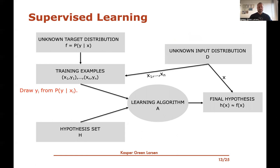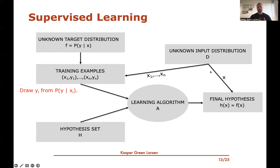Going back to the supervised learning setup: there's some unknown target distribution — a conditional distribution p(y|x) over labels given a feature vector. There's an unknown input distribution D from which training examples x1 to xn are drawn as independent samples. For each xi, we generate the label yi from the conditional distribution given xi. This gives us n training examples (x1, y1) up to (xn, yn), which are fed into the learning algorithm, which searches through a hypothesis set and produces a final hypothesis h.